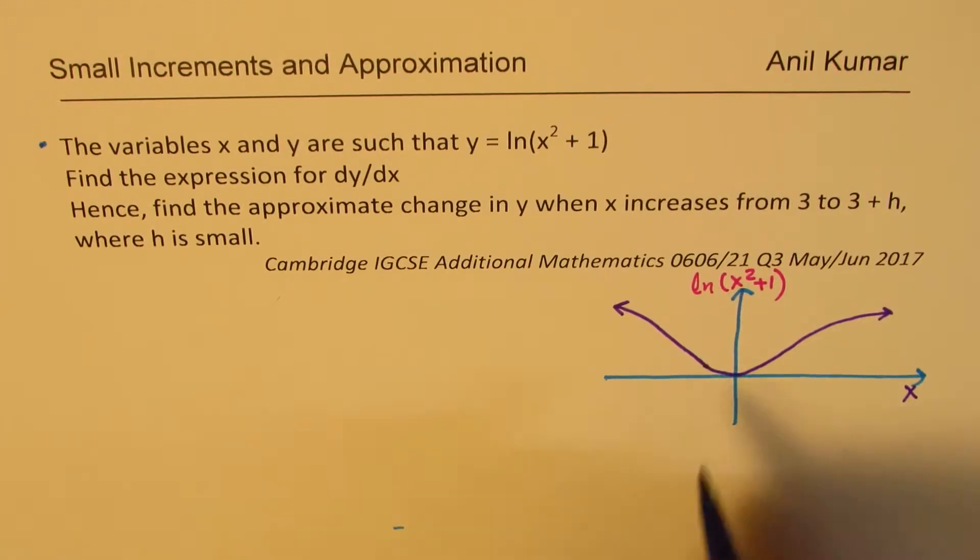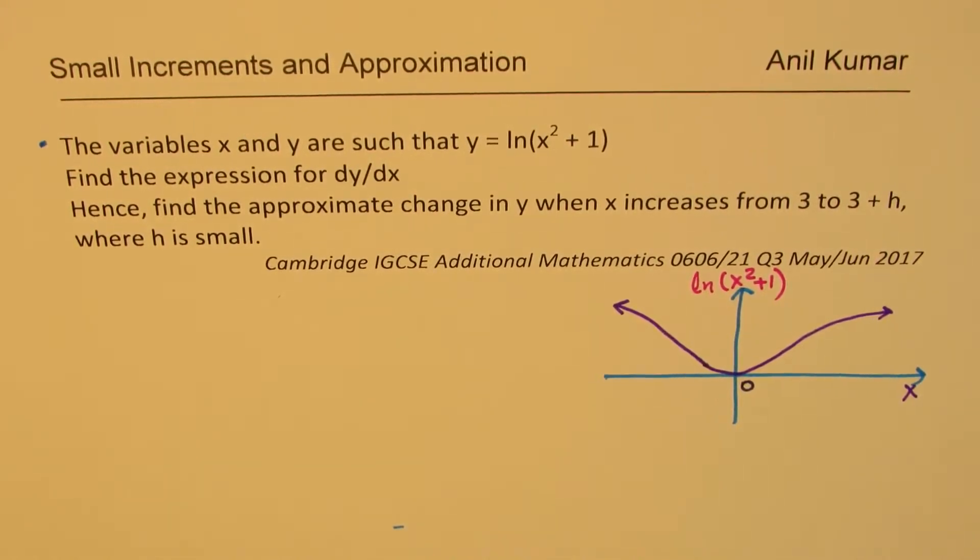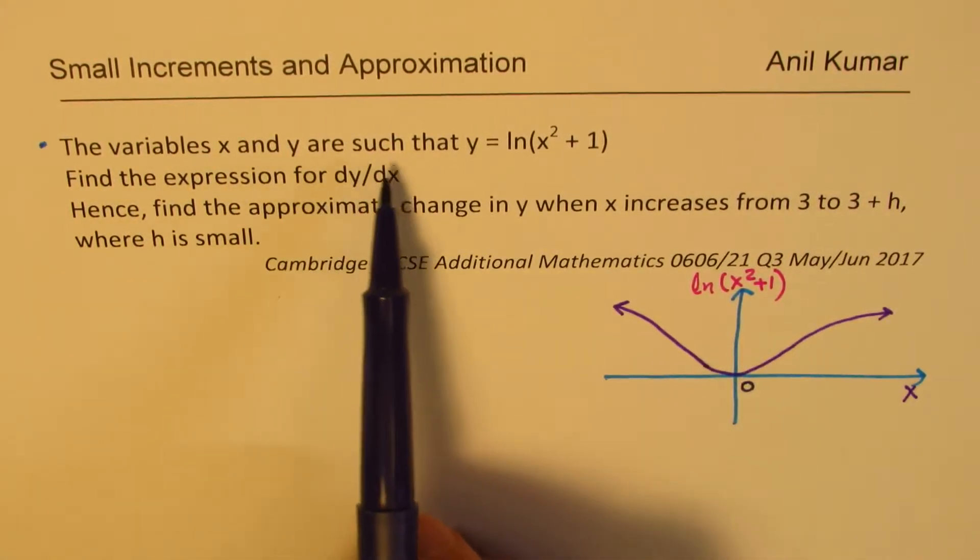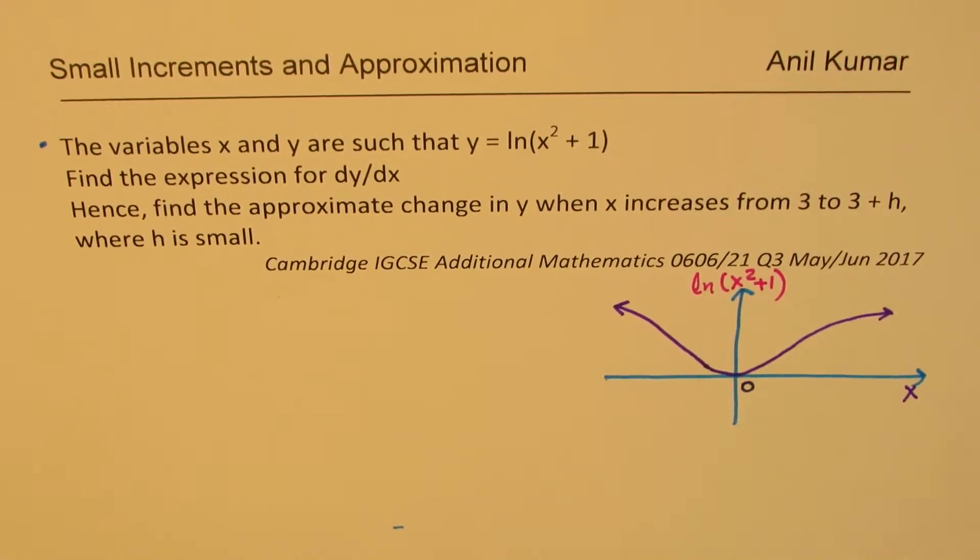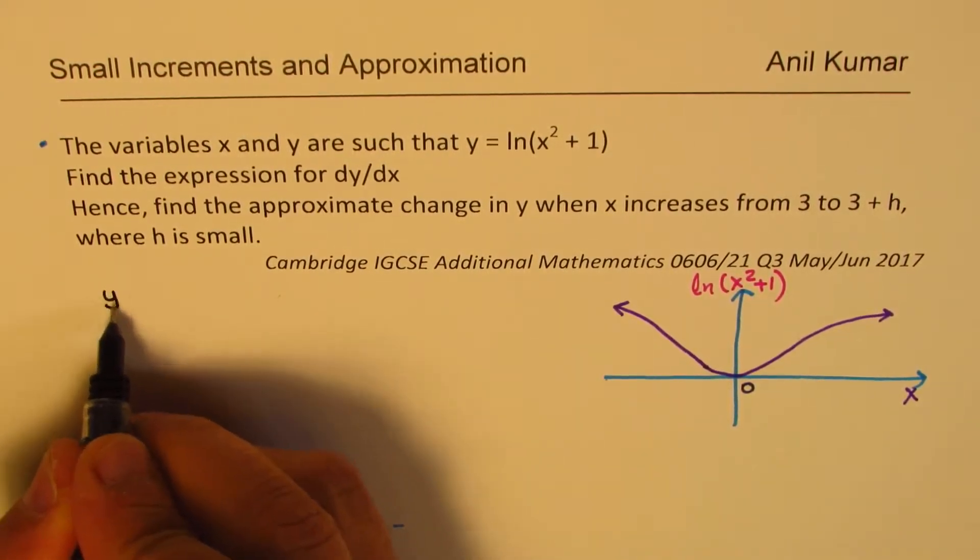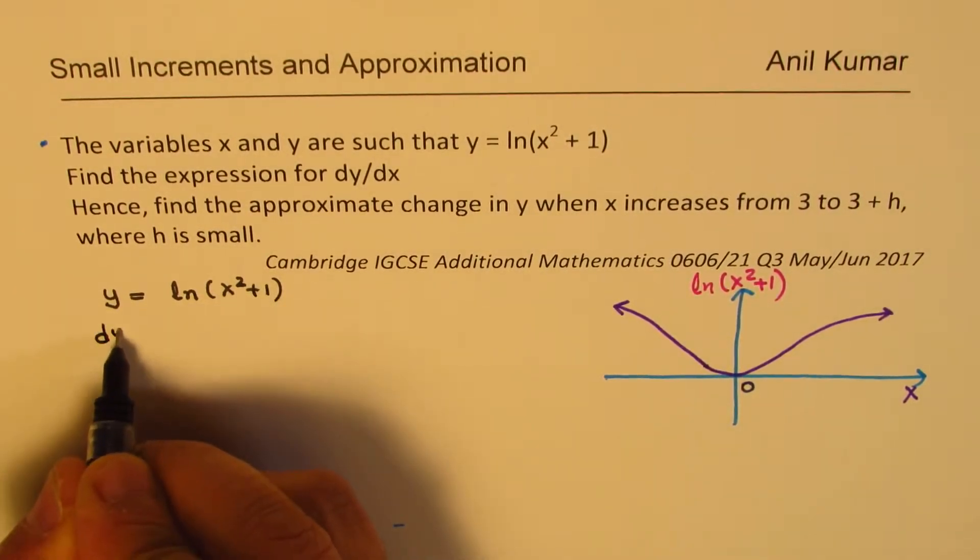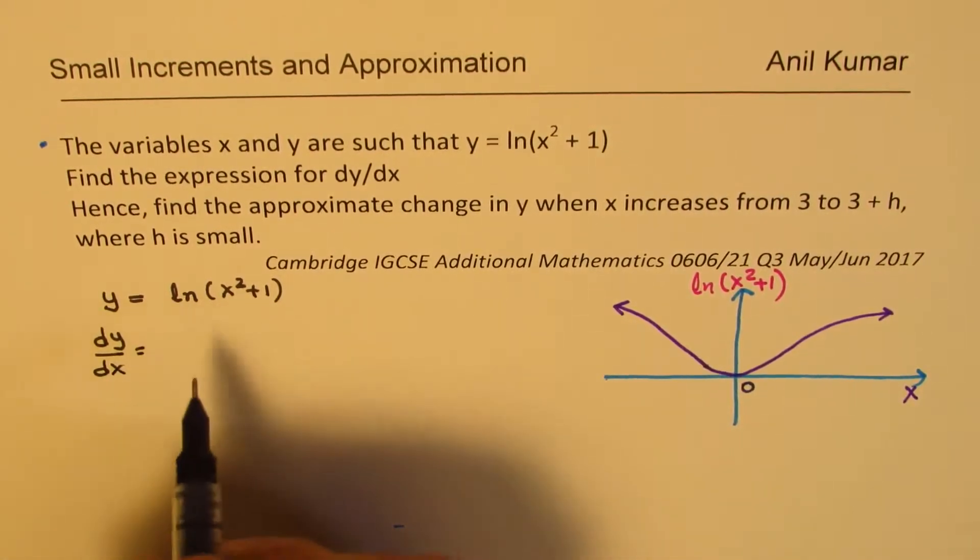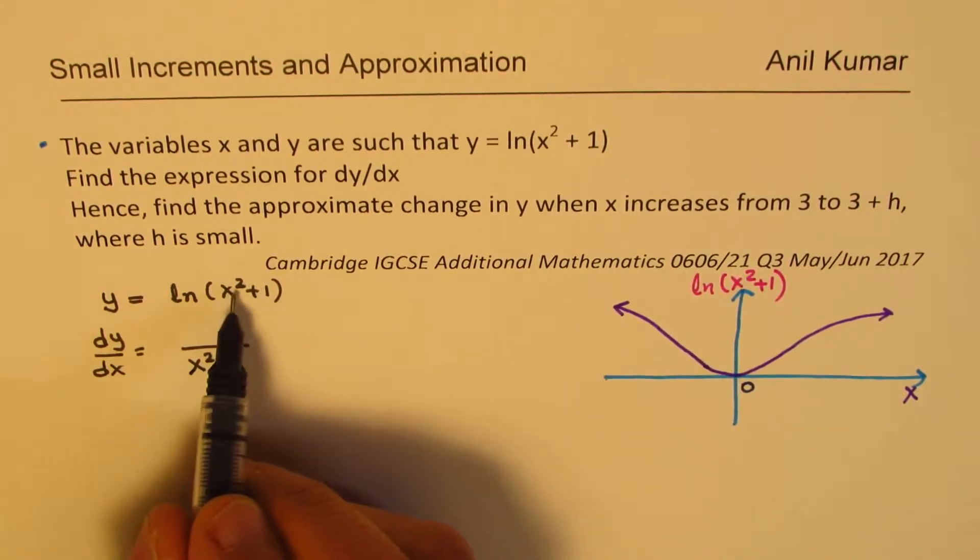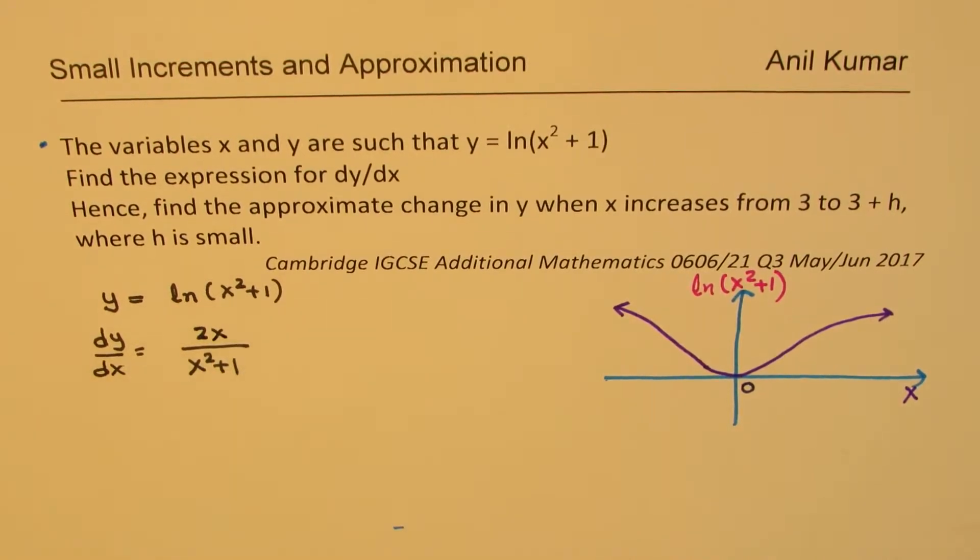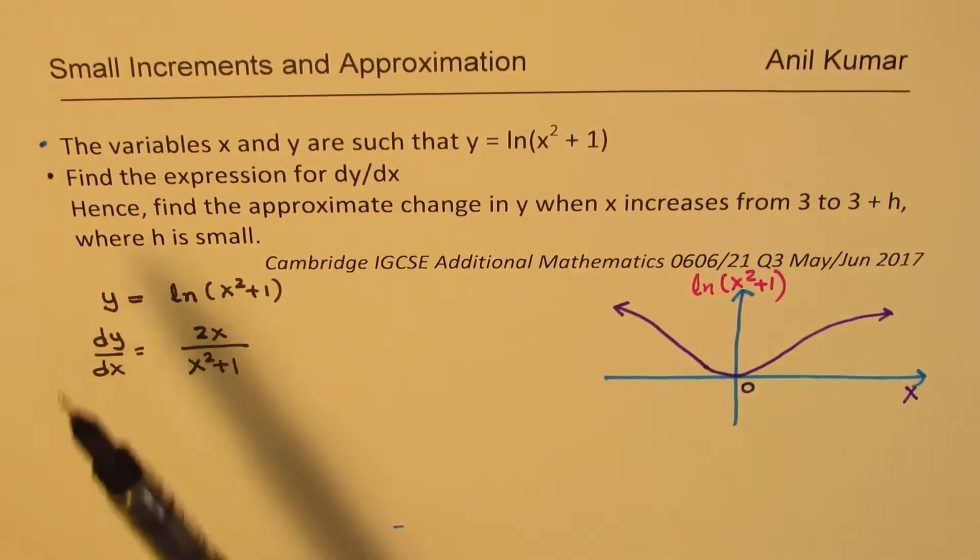The variables x and y are such that y is equal to this. Find the expression dy/dx. That is not so difficult. We have the function y equals ln(x² + 1), so dy/dx is the derivative of ln, which is 1 over this - this comes in the denominator - plus the derivative of inside function, which is 2x. So we get that derivative.